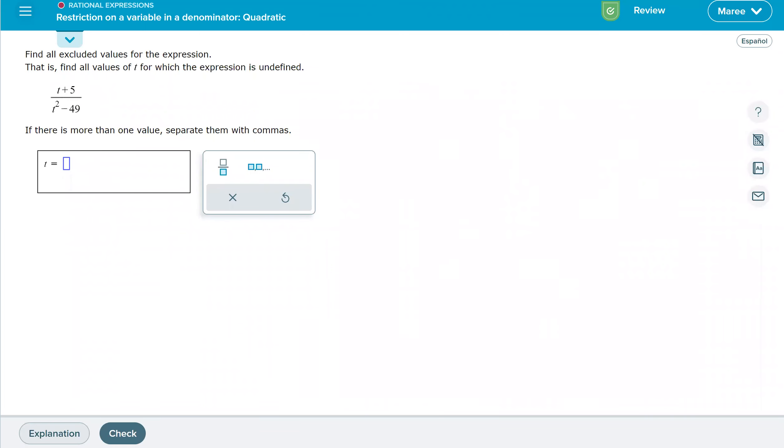One more. We're going to factor t squared minus 49. That factors to t minus seven times t plus seven equals zero. So our solutions are going to be t equals positive seven and negative seven.